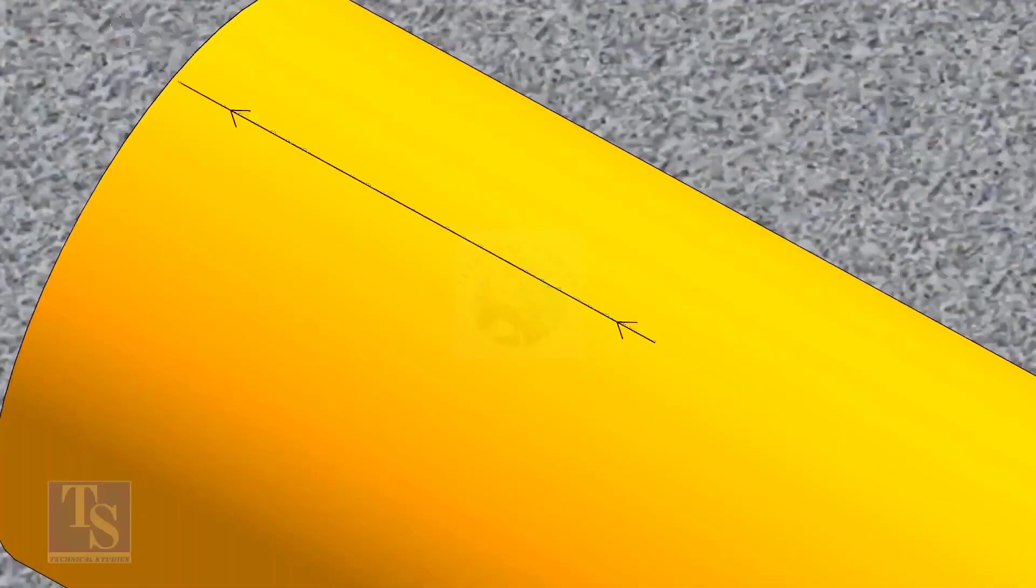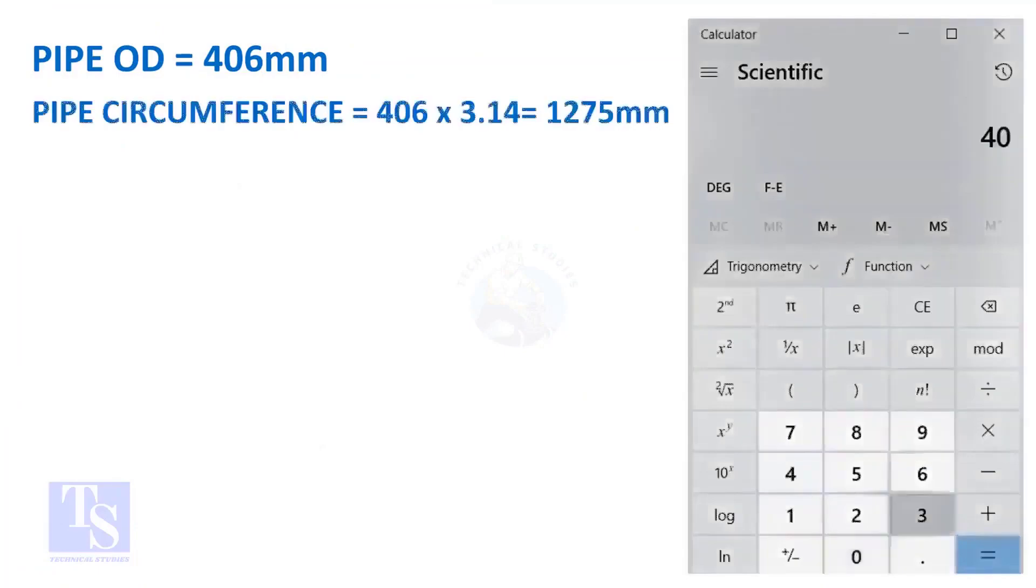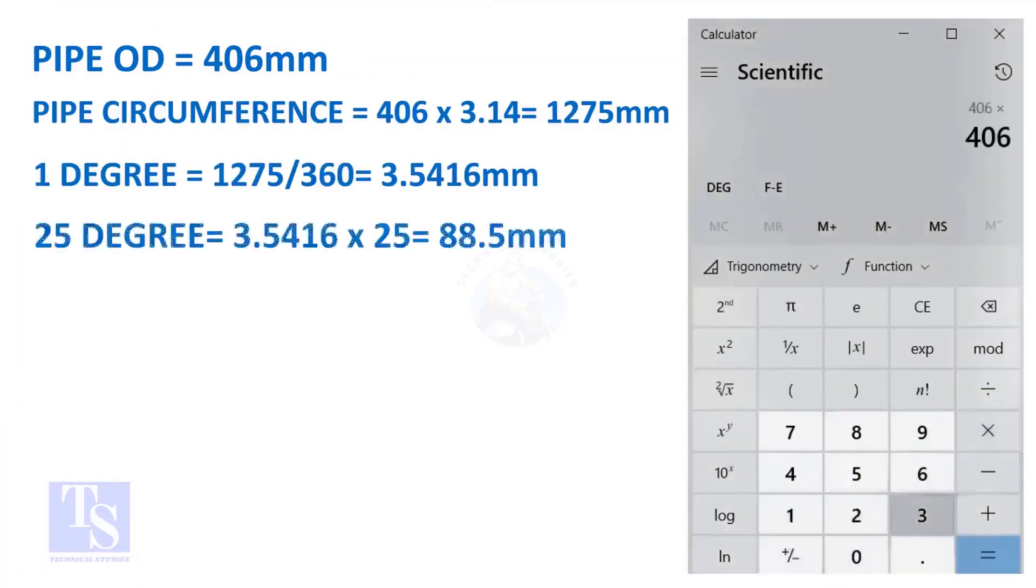Let us calculate the circumferential distance or arc length for 25 degrees. Multiply the OD by 3.14. You will get the circumference of the pipe. Divide the circumference by 360, you will get the arc length of 1 degree.